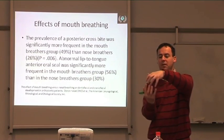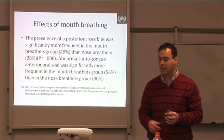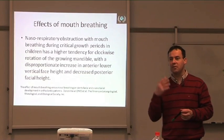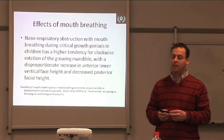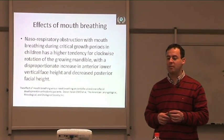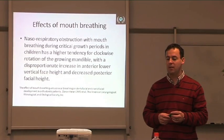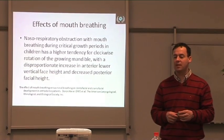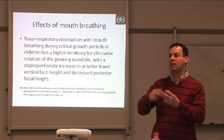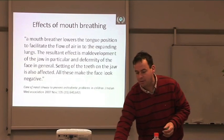Abnormal tongue anterior oral seal was significantly more frequent in the mouth breathers. The ability for the individual to close their lips was more difficult in the mouth breather, which you'd expect, compared to the nasal breather. Nasal respiratory obstruction — where the nose is blocked during mouth breathing during critical growth periods in children — has a higher tendency for clockwise rotation of the growing mandible with a disproportionate increase in the anterior lower vertical face height.